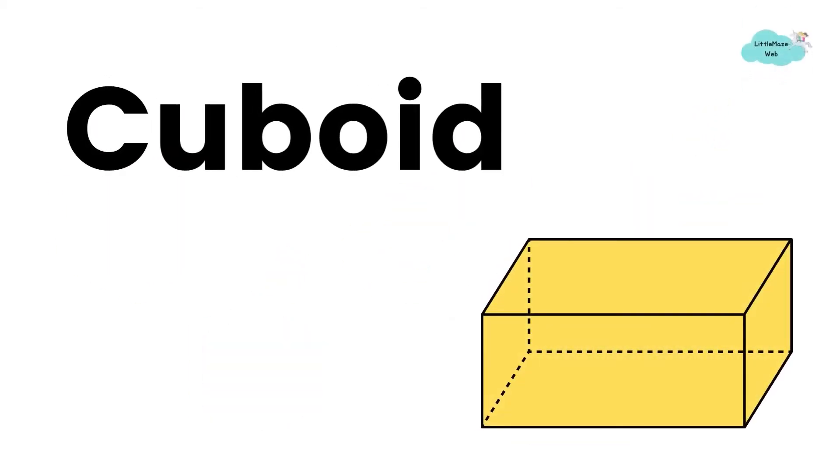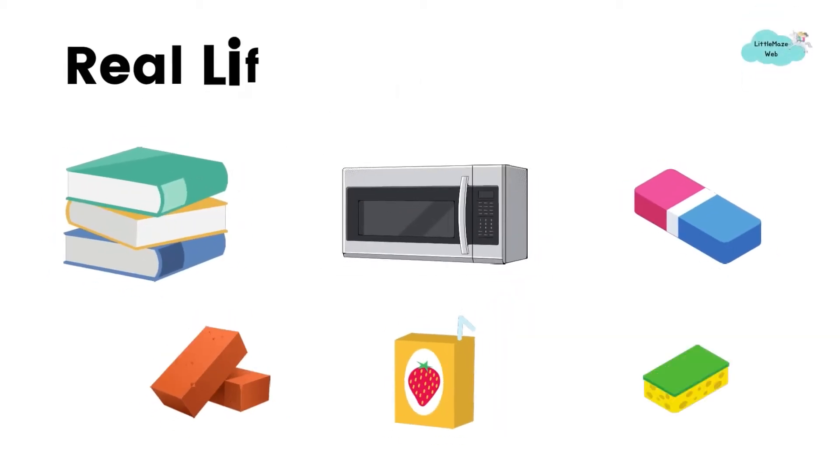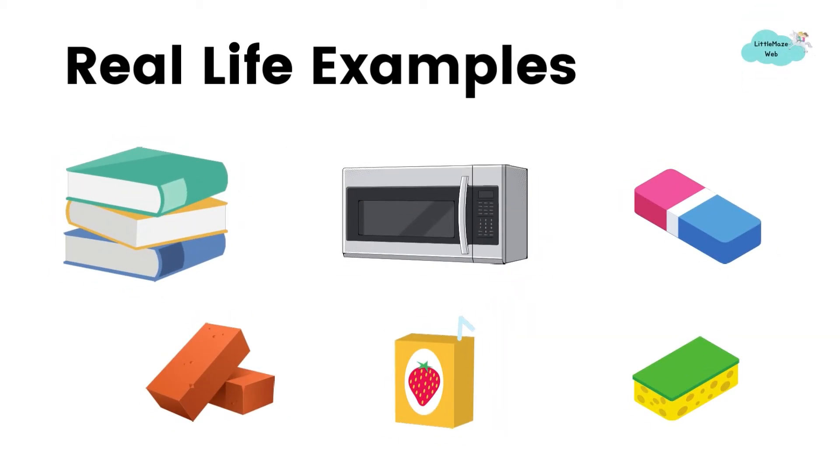This is a cuboid. Real life examples of cuboid are books, oven, eraser, bricks, juice, sponge.